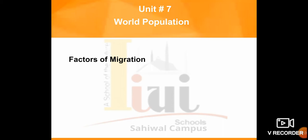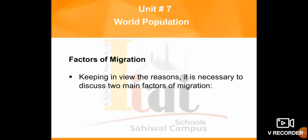Now we will study the factors of migration. We have already seen the reasons for migration and the types of migration. Keeping in view those reasons, it is necessary to discuss two main factors of migration. These two factors are: the first one is push factors, and the second one is pull factors.